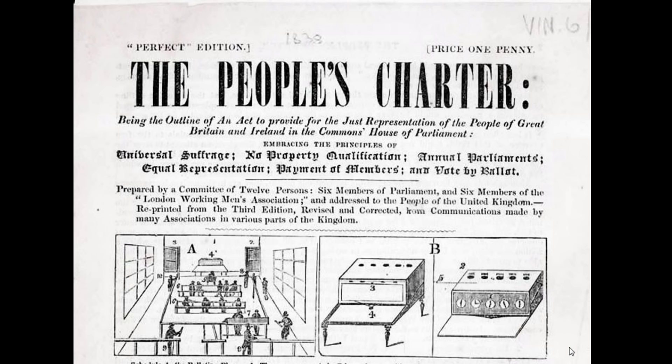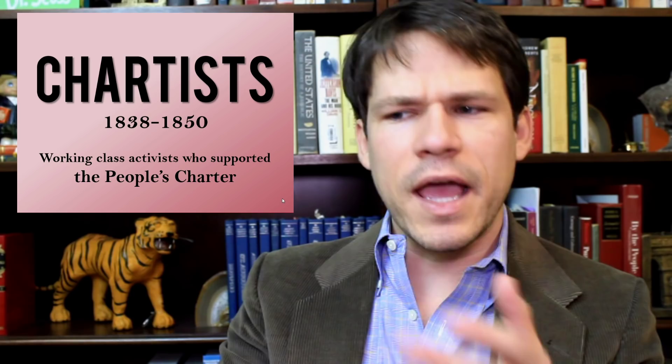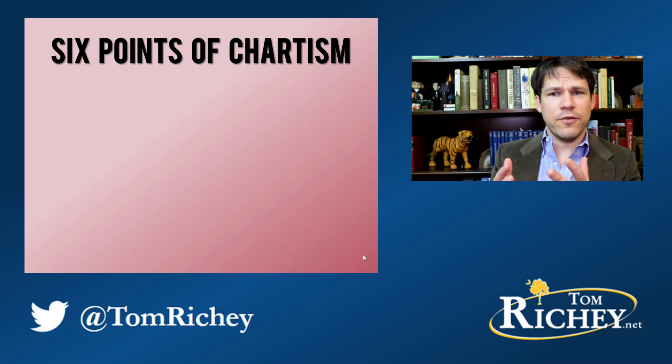In the 1830s, the People's Charter starts to gain traction. The whole idea of the People's Charter was to make the government more accountable to the common people of Britain. The Chartists are operating largely between 1838 and 1850, and these are working class activists who supported the People's Charter. Chartism was defined by six points.